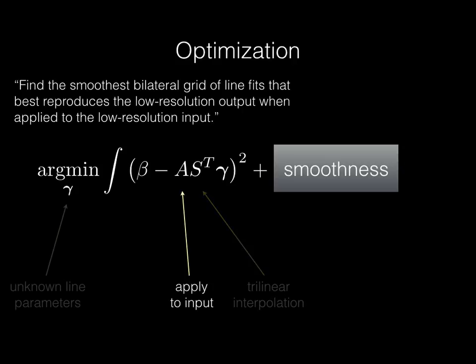We then apply the linear model to the image. The A matrix is simply a diagonal matrix of the input intensities concatenated with the identity matrix. And we want to minimize the L2 difference between the reconstruction and the desired output beta. Note that both A and S-transpose depend on the input image. This makes the solution gamma specific to the input-output pair.